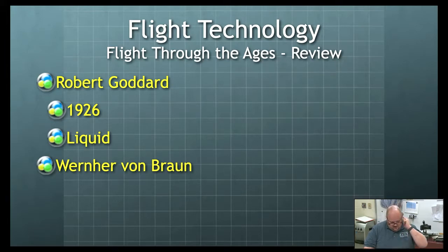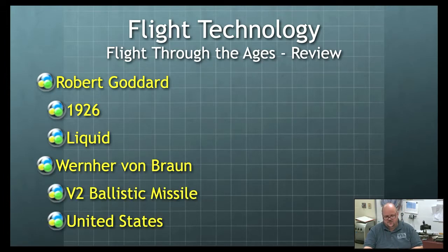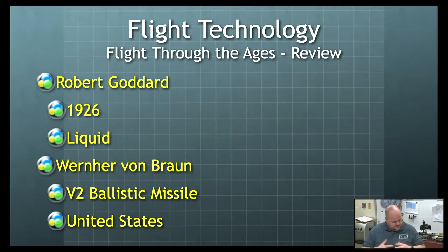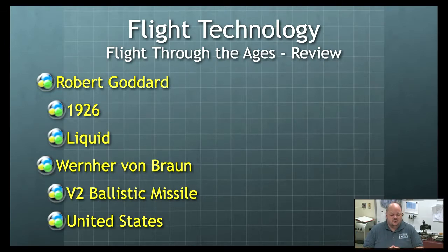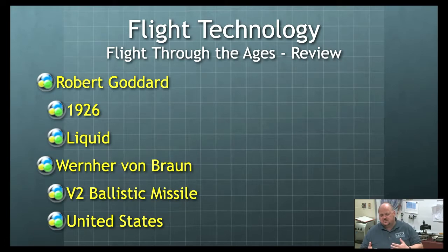Von Braun — what did he develop, and whose space program did he eventually help? Von Braun developed the V2 ballistic missile and ended up helping the U.S. space program. Von Braun is German and worked for Nazi Germany, but he eventually got out and defected. We were able to bring him in to assist with our U.S. space program. The V2 ballistic missile was the first major thing he launched.